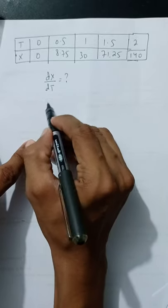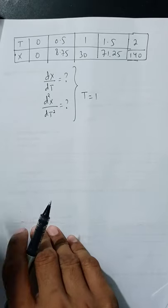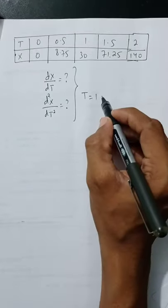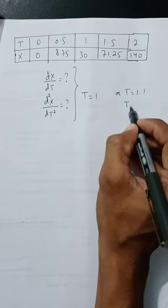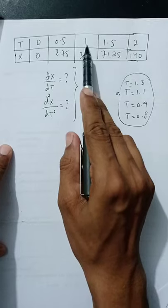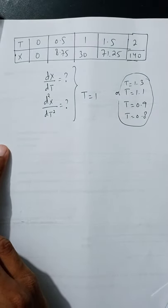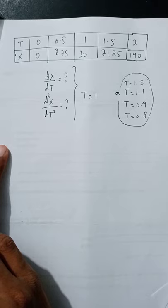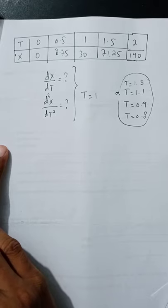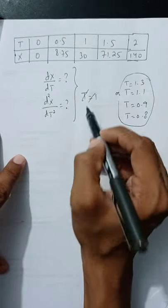We need to find dx/dt and d²x/dt² both at t = 1. Now t = 1 is the centered value in the table. Note that if we use t = 1 exactly as x₀, then p = (x − x₀)/h = 0, which makes the derivative calculation trivial. So instead, let's consider a nearby value to get more meaningful practice with substitution.